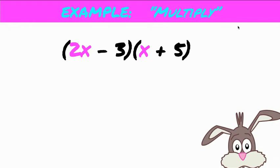Here we have two binomials. Remember, they're called binomials because they're two terms separated by a plus or a minus, and we have two of those.